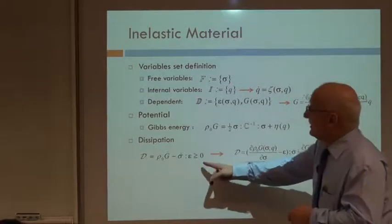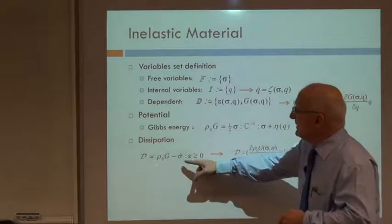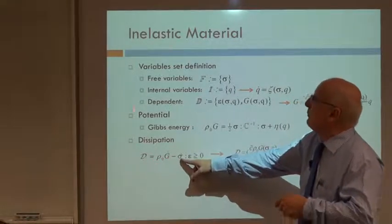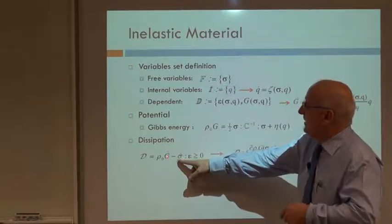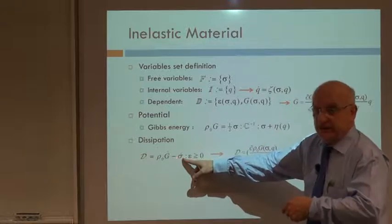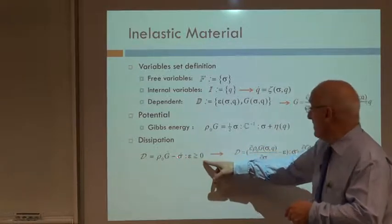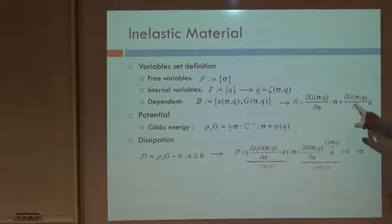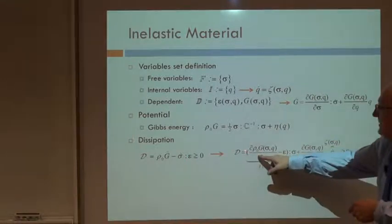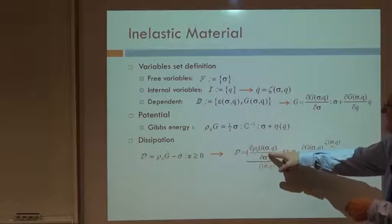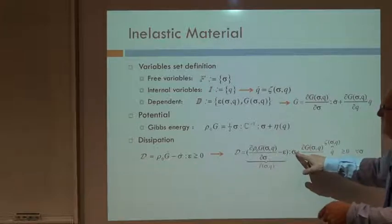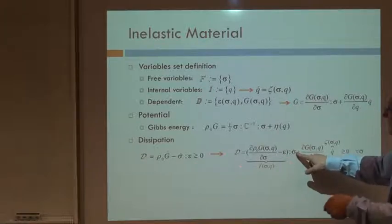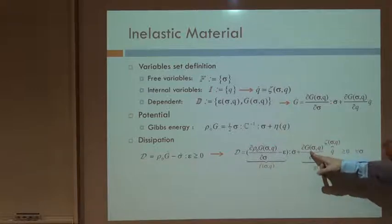The next step: we consider dissipation written in the way that we write dissipation for stress-driven materials — in terms of the Gibbs energy and sigma dot. This is the alternative form we have seen for dissipation. We replace that equation here. D equals rho zero G dot. G dot is rho zero G with respect to sigma times sigma dot, and we group that with epsilon times sigma dot, plus the derivative of G with respect to Q times Q dot.